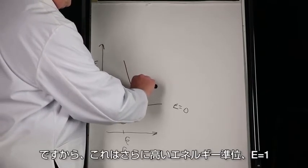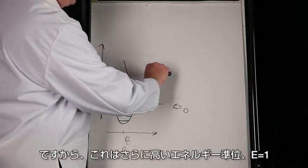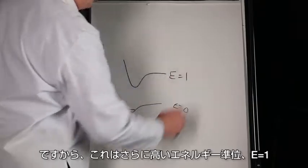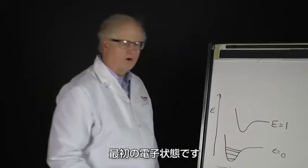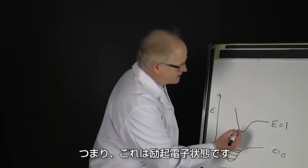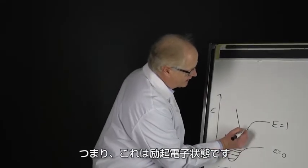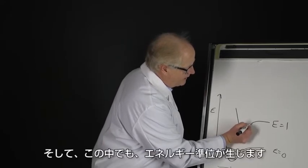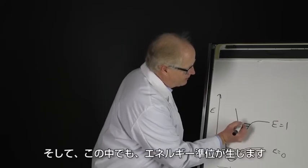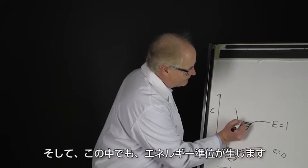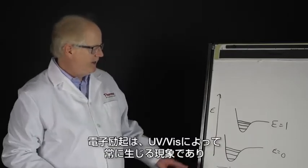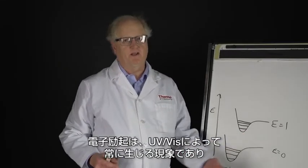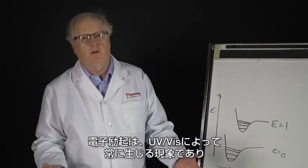Now there are going to be other electronic energy levels. Here we have a higher energy level, E equals one — a first excited electronic state — and in there there are also going to be vibrational energy levels.